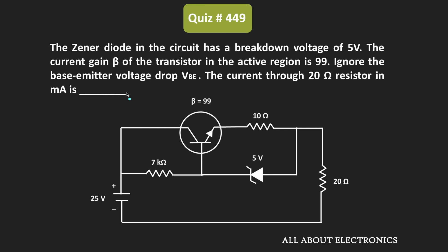Therefore, for the given circuit, the current through the 20 ohm resistor is equal to 250mA.